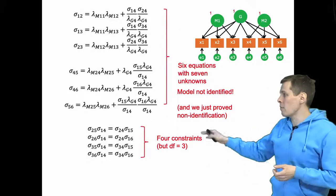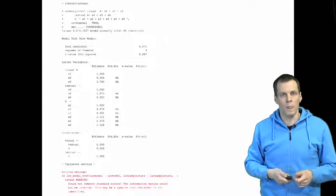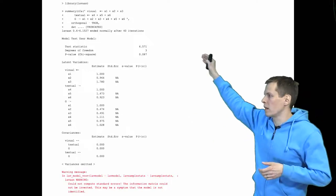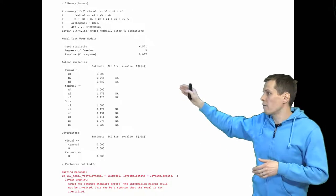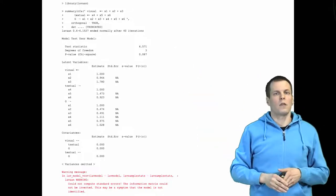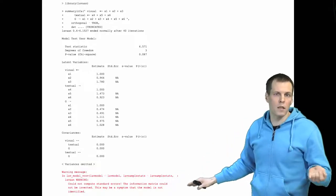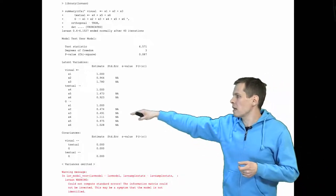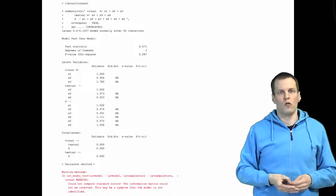What will happen if we try to estimate this model using SEM software? Using R with the Holzinger and Swineford dataset that comes with the lavaan software and estimating this model — which has visual and textual three-indicator factors plus the general factor — the software gives a warning that this is potentially not identified. We get missing standard errors, which is a symptom of non-identification, and we know these estimates should not be trusted.